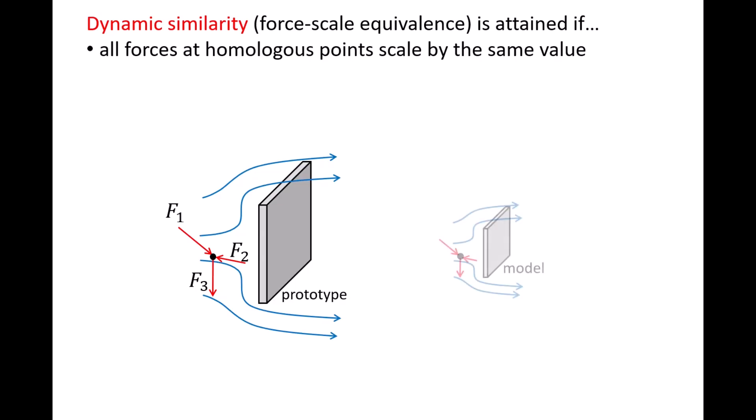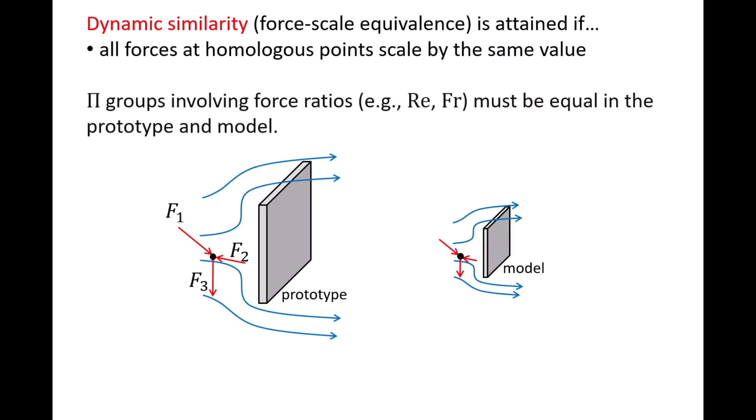If dynamic similarity is attained, the forces at homologous points in the model are all scaled by the same factor. The way that we attain dynamic similarity is by ensuring that the pi groups involving force ratios, such as the Reynolds number, Froude number, and so on, are equal in the prototype and model.